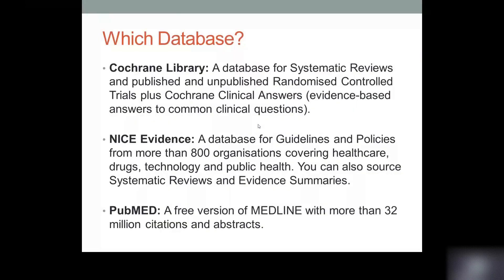Outside of the Athens account, there are a number of databases which are free to access and also offer high quality evidence-based medical research. The top one is Cochrane Library, which is a database for systematic reviews and randomised control trials, both published and unpublished. We then have the NICE Evidence Search, a database for guidelines and policies from over 800 organisations across the world covering healthcare, drugs, technology and public health — and it is also another way to source systematic reviews. Finally, PubMed is a free version of Medline and contains millions of citations and abstracts.